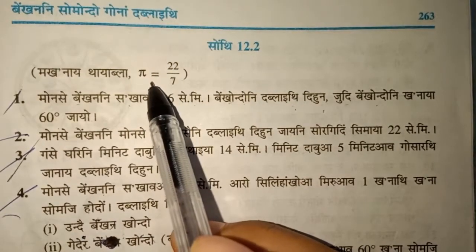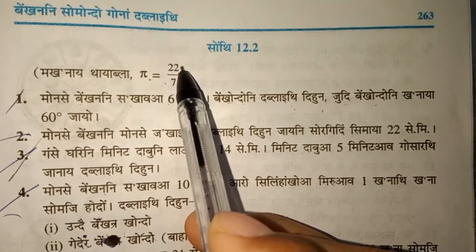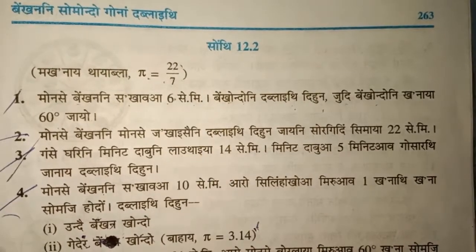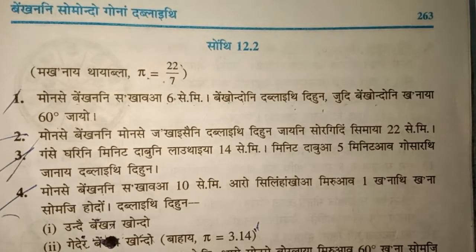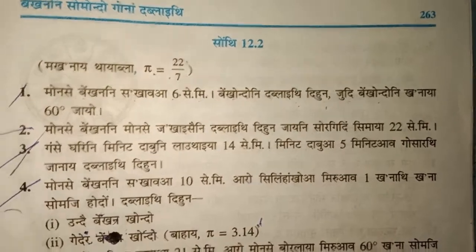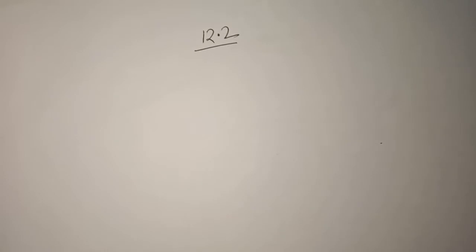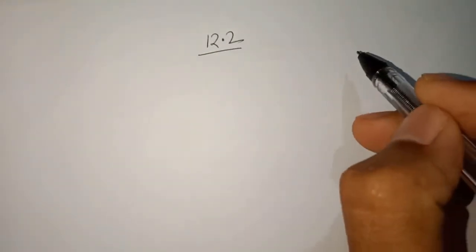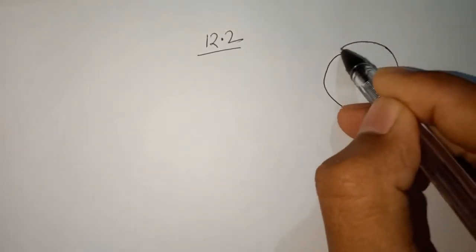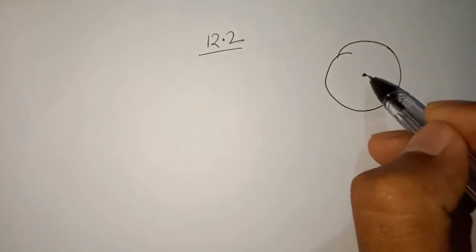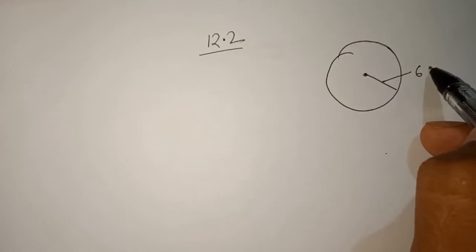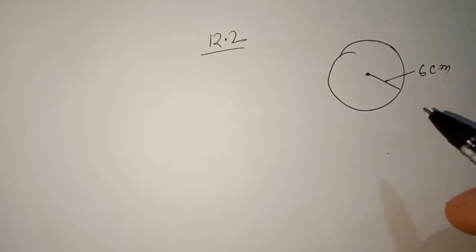We will use 22 by 7 for pi. The question gives us 6 cm and 6 cm, which means the radius is 2 cm. The question is known — that means r equals 6 cm.